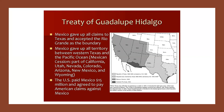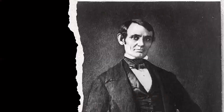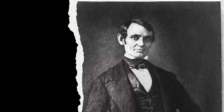Elected to Congress as a Whig in 1846 — the Whig party being a forerunner of the Republican Party — Abraham Lincoln opposed the war, calling it immoral and pro-slavery. Shortly before the signing of the peace treaty, he demanded some answers and introduced a series of resolutions in late 1847.